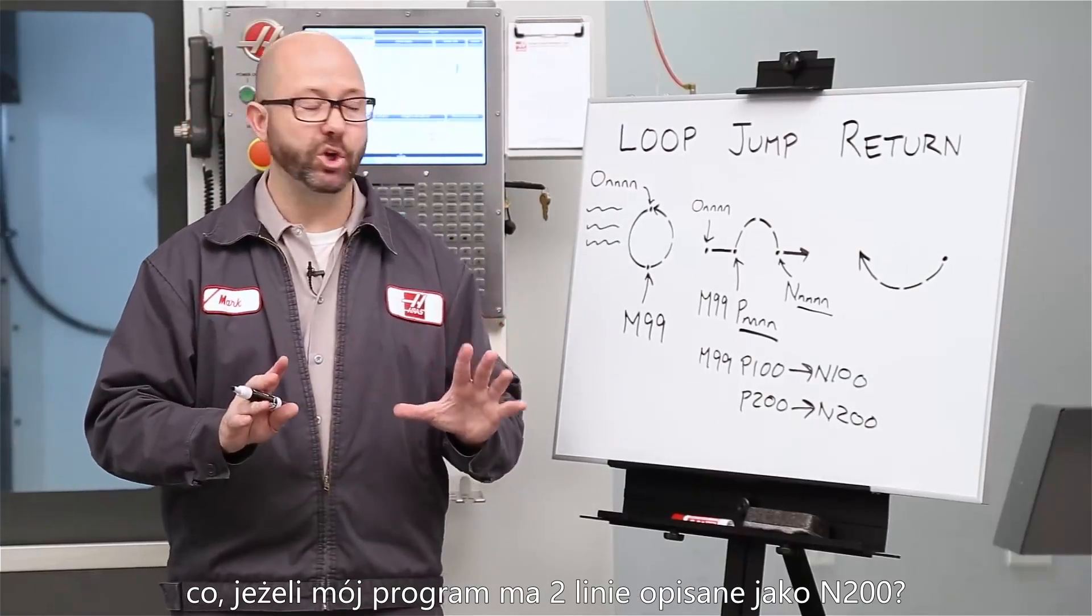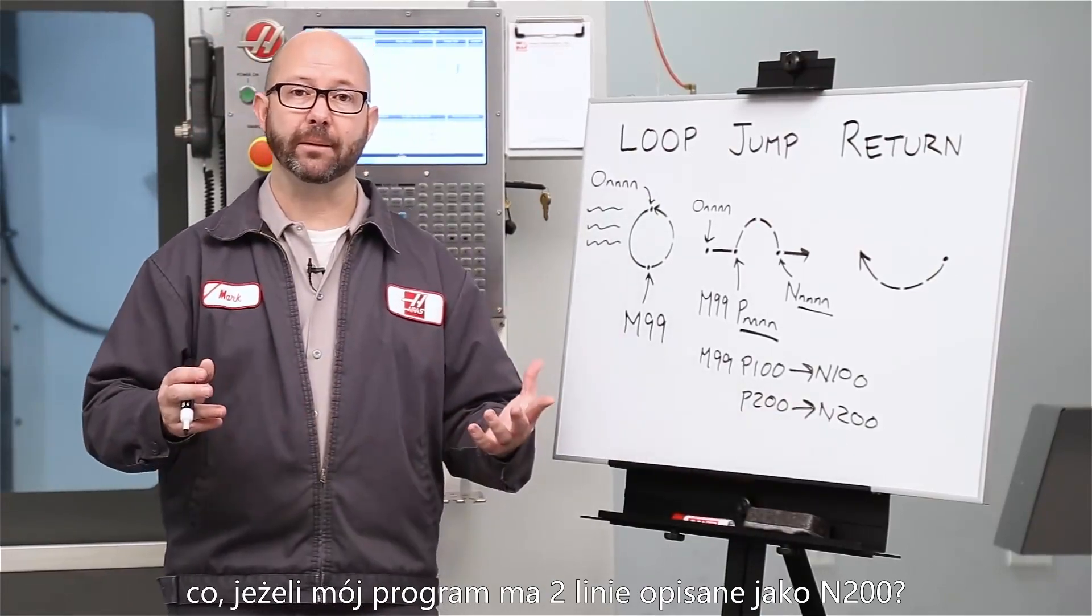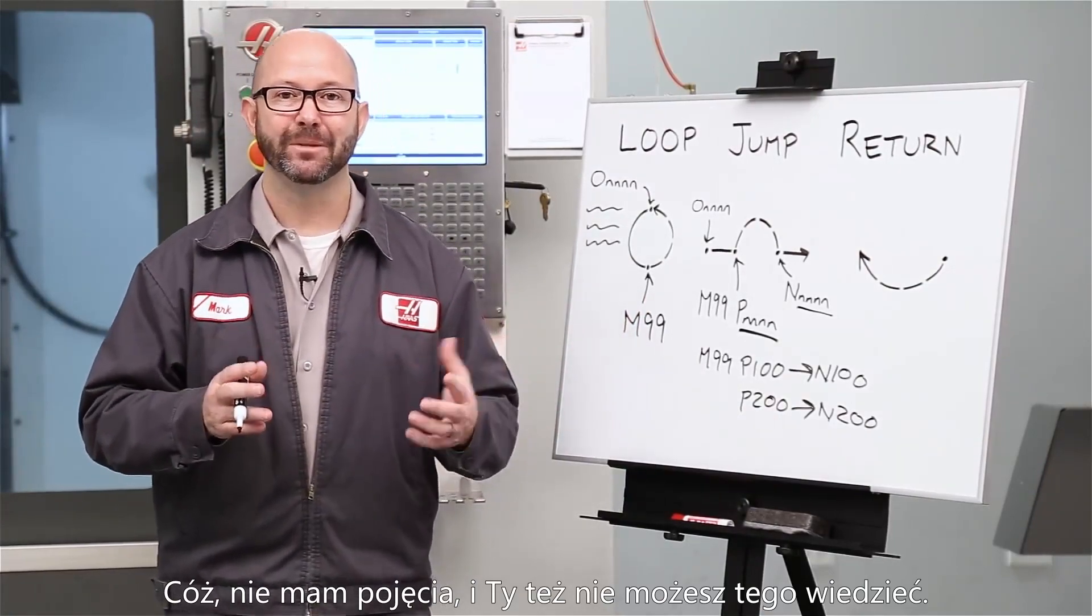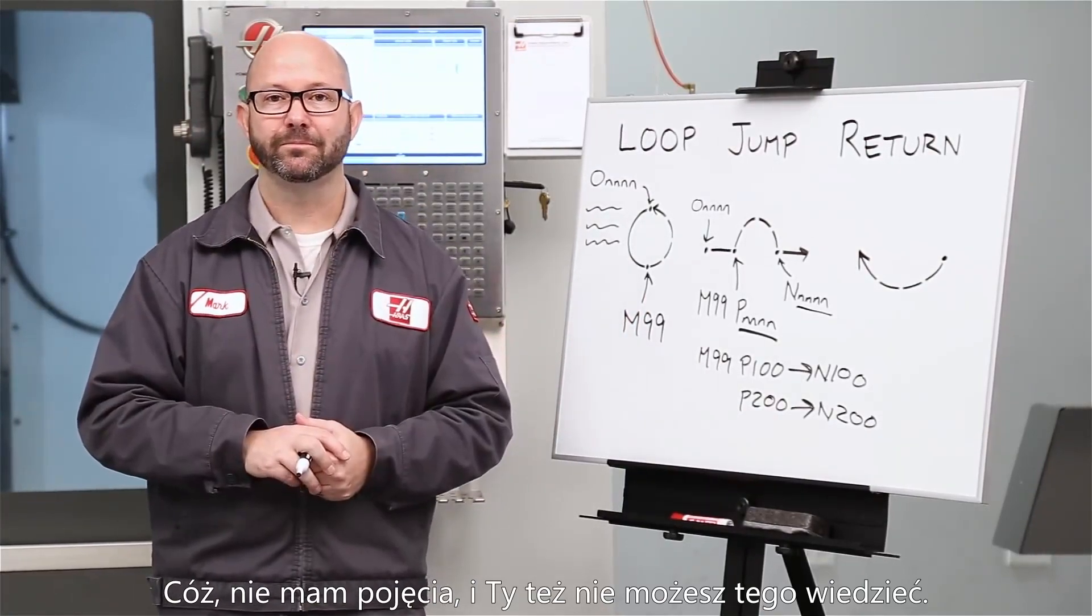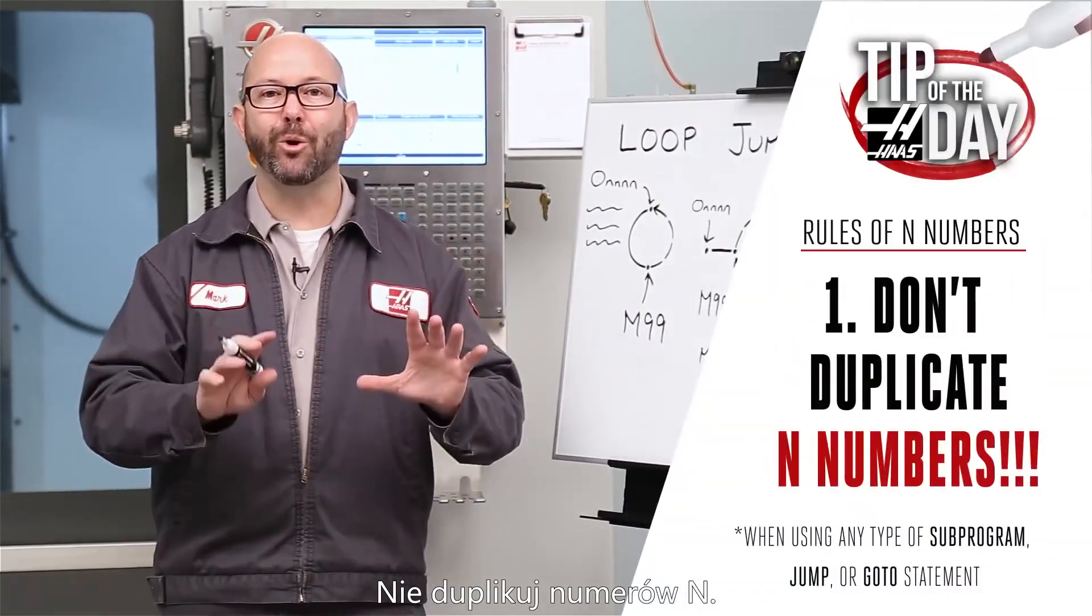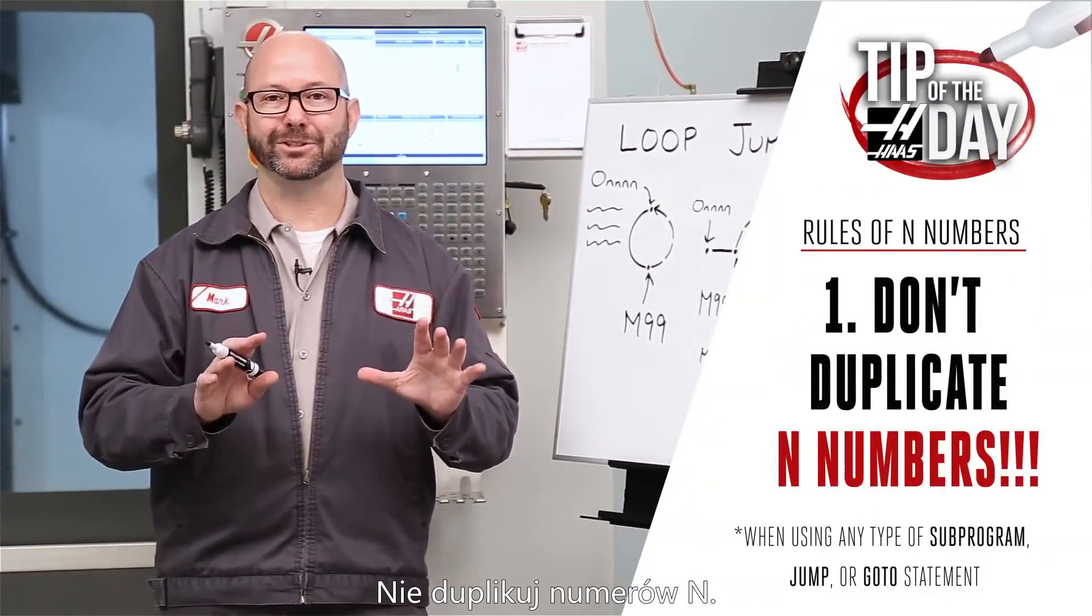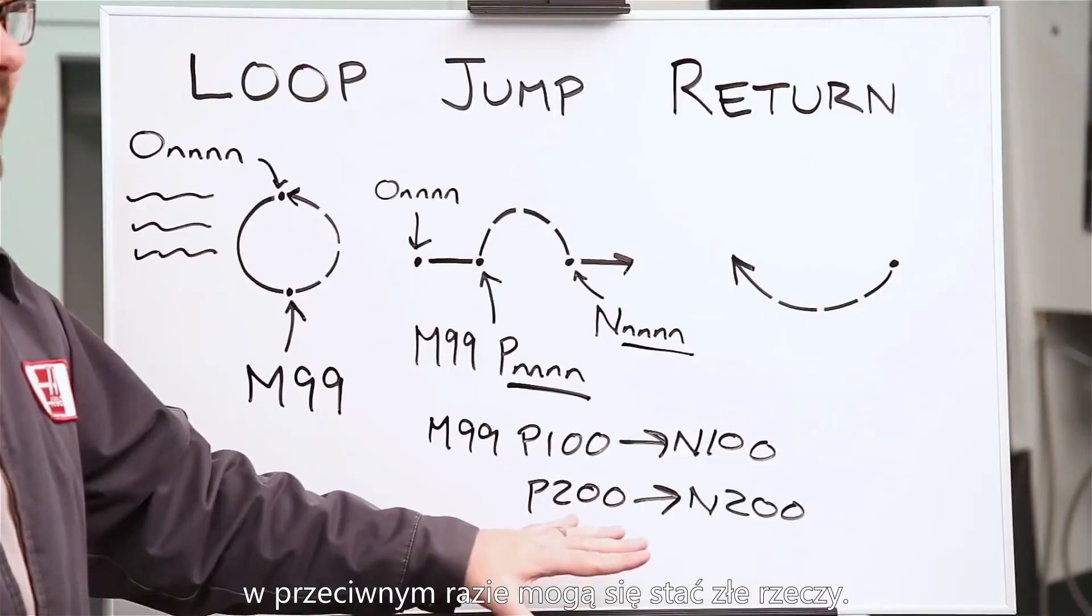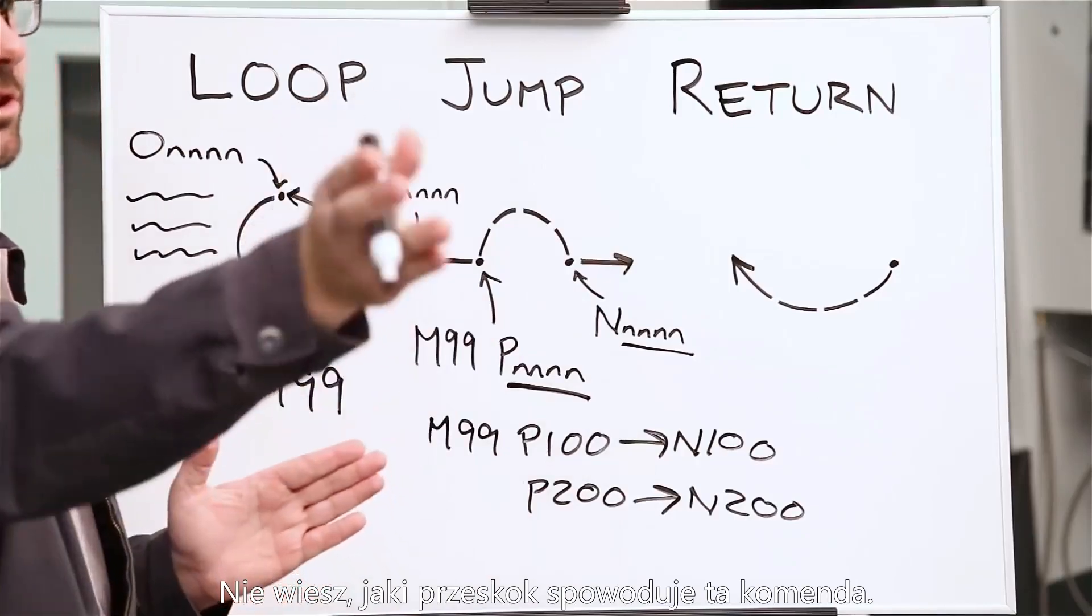But you might be asking yourself, what if I have two line N200s in my program? Where is it going to go? Well, I have no idea, and you can't be sure either. This brings us to the first rule of N numbers: don't duplicate N numbers. You need only unique N codes in your program. Otherwise, bad things could happen. You don't know where this thing's going to go.